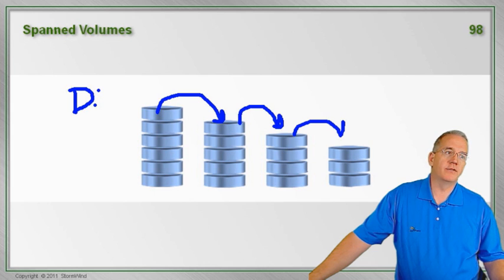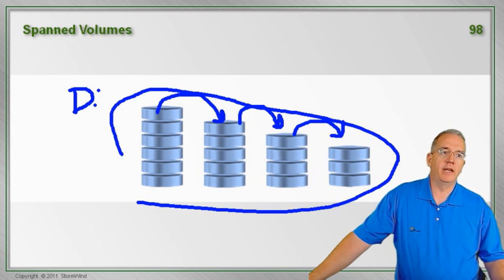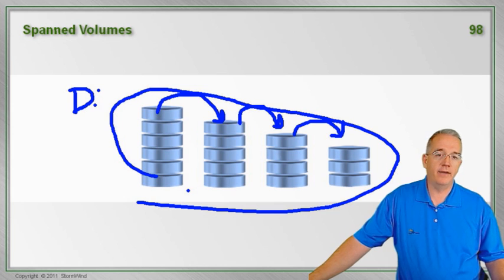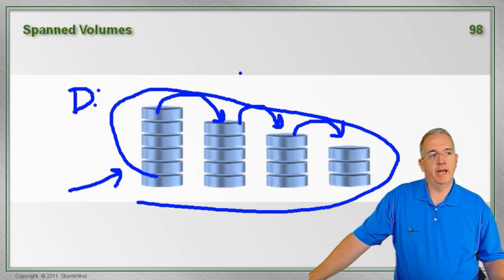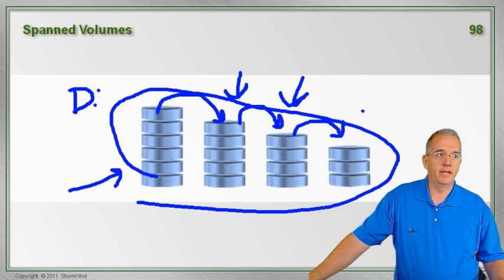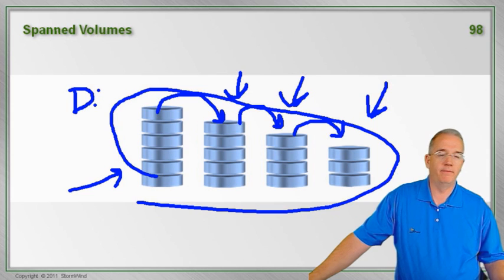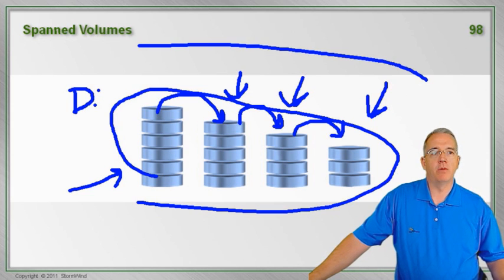Another advantage of a span drive is these little chunks that I'm taking from different physical drives don't have to be the same size. So this could be 150 gig, this could be 27 meg, this can be 300 gig, this could be 4 gig. And it just adds them all together.